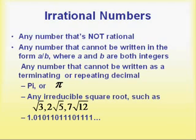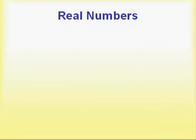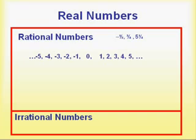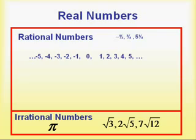So together, all of these sets of numbers — the natural numbers, the whole numbers, the integers, the rational numbers, and the irrational numbers — make up what we know as the real numbers. These include numbers like negative one-half, three-fourths, five-and-one-fourths, all the positive and negative whole numbers, and the irrational numbers like pi, square root of three, two square roots of five, seven square roots of twelve. All of these different kinds of numbers are included in the real numbers.